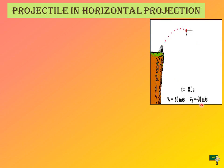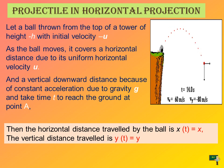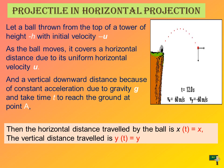The velocity gets positive when it goes up and negative when it goes down. Let a ball be thrown from the top of a height h with initial velocity u. As the ball moves, it covers a horizontal distance due to its uniform horizontal velocity u, and a vertical downward distance due to constant acceleration due to gravity, taking time t to reach the ground at point A.